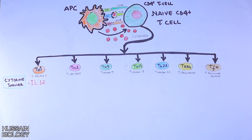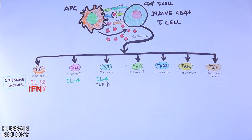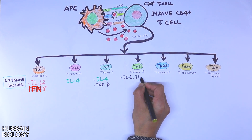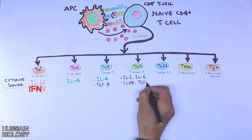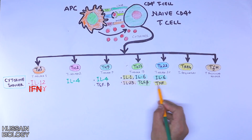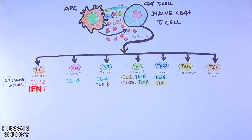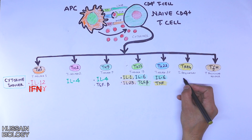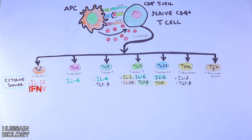Interleukin-1, IL-2, and interferon gamma drive the differentiation of TH1 subsets. Interleukin-4 drives differentiation of TH2. Interleukin-4 and TGF-beta drive differentiation of TH9. IL-16, IL-23, and TGF-beta drive differentiation of TH17. Interleukin-6 and TNF drive differentiation of TH22. IL-2 and TGF-beta drive differentiation of T regulatory cells, and IL-6 with other signals drive differentiation of T follicular helper cells.